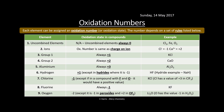Finally, oxygen is minus two except it's minus one in peroxides and plus two in OF₂. For example, in lithium oxide oxygen is minus two. But in H₂O₂ (hydrogen peroxide) oxygen is minus one - the word 'peroxide' means for every oxide, so two hydrogens and two oxygens. In OF₂, since fluorine is always minus one, oxygen must be plus two. As long as you know these rules you can work out oxidation states.